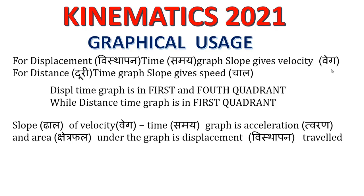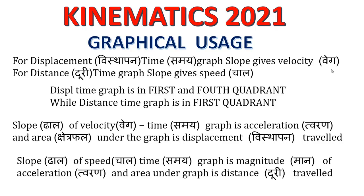The slope of a velocity-time graph gives acceleration, and the area under the graph gives displacement traveled. For a speed-time graph, the slope gives the magnitude of acceleration and the area gives distance traveled. Distance is a scalar quantity and displacement is a vector quantity, so we treat these quantities separately.